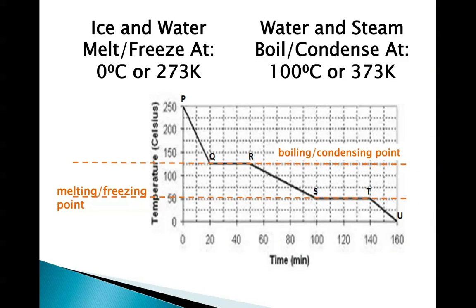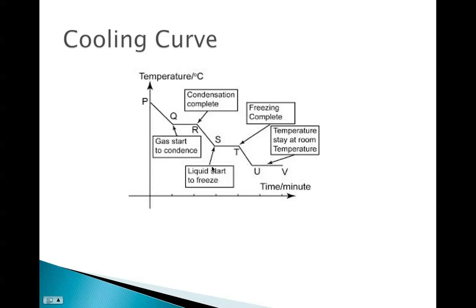We can look at and find our boiling and condensing points and our melting and freezing points by looking at where those phase changes occur and using our y-axis. Water and ice melt and freeze at 0 degrees Celsius, or 273 Kelvin. Liquid water and steam boil and condense at 100 degrees Celsius, or 373 Kelvin — something to keep in mind when looking at those specific types of graphs.